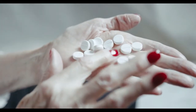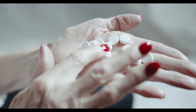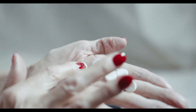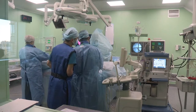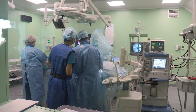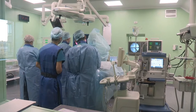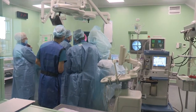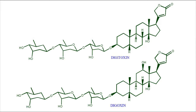Digoxin is used to treat various heart problems such as atrial flutter, atrial fibrillation, and heart failure with its associated symptoms, as well as to induce fetal demise prior to an abortion. Digoxin and digitoxin are very similar compounds, but there are key differences due to which the use of digitoxin is very limited.